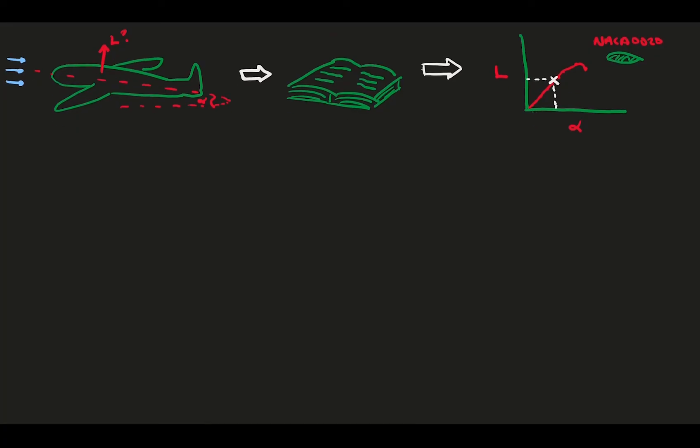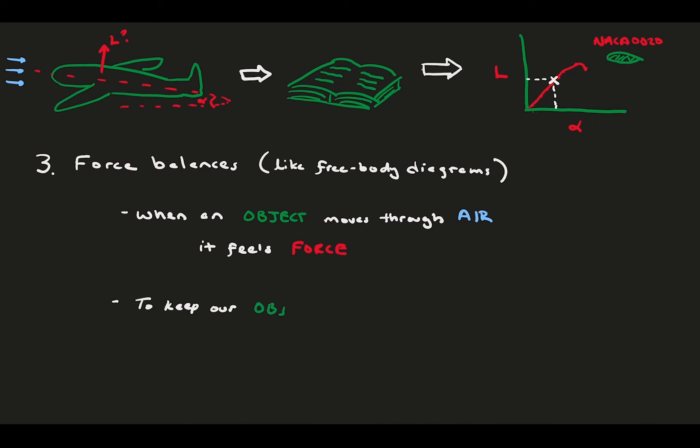While we care about the body forces generated by the flow, we're also interested in the entire force balance of a vehicle, much like a free body diagram. When an object like a plane moves through the air, it experiences a number of forces in various spots. Generally, our goal is to move steadily, meaning no acceleration or deceleration in any direction. In order to maintain steady flight, we need to counter the forces from the air.